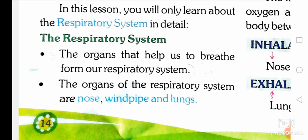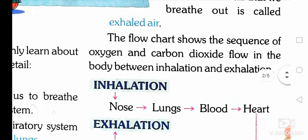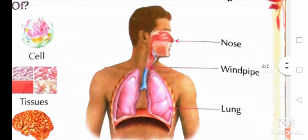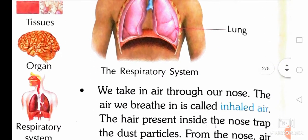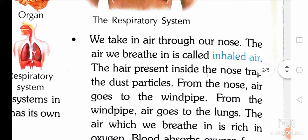The organs that help us to breathe form our respiratory system. We already checked which organs are present in the respiratory system. The first one is the nose, the second one is the windpipe, and the third one is the lungs.